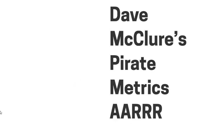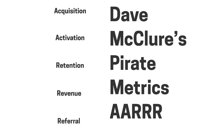He categorizes the metrics a startup needs to watch as Acquisition, Activation, Retention, Revenue, and Referral — also known as AARRR. It gets its name from the acronym of five distinct elements of building a successful business.